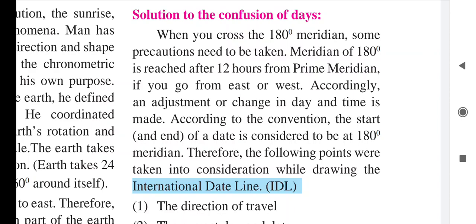When crossing the 180° meridian, you have to be alert and take some precautions. The zero degree prime meridian and the 180° meridian have a 12-hour difference between them. If you go east, time moves ahead; if you go west, time moves back. Accordingly, an adjustment or change in date and time is made. The start and end of the date is considered to be at the 180° meridian, so the following points are taken into consideration while drawing the International Date Line.